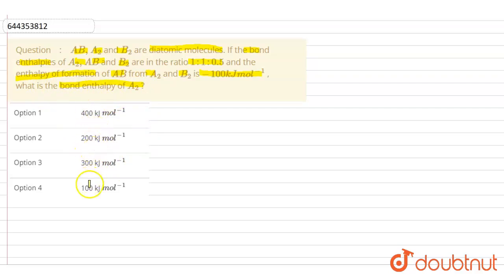So first of all, we will see how to solve this. As given, the ratio of A2, AB, and B2 bond energies or bond enthalpies, we will convert this ratio into whole numbers. So bond energy or bond enthalpy of A2 equals x. Let's suppose that.